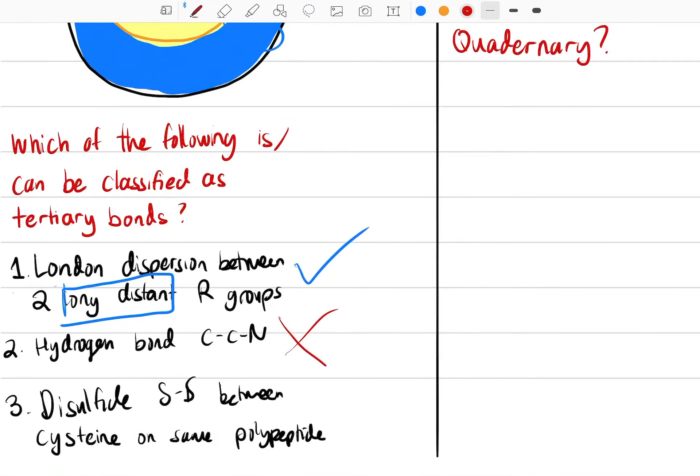The third one is a disulfide bond between S and S between cysteine on the same polypeptide. This is very important information and you'll figure out why I'm saying that.